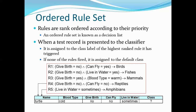Rule R1: give birth equals no, can fly equals yes → birds. Rule R2: give birth equals no, live in water equals yes → fishes. Rule R4 is for reptiles, ordered by priority.